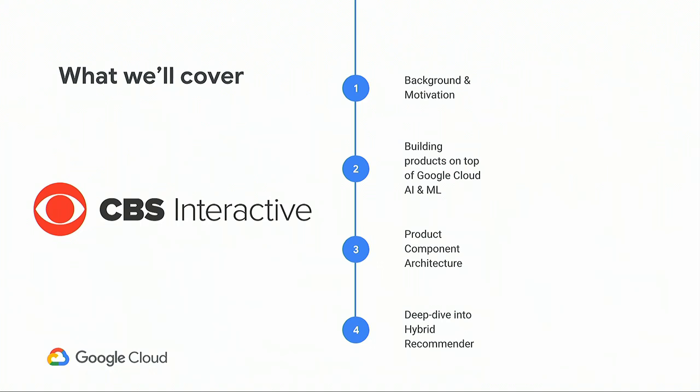Today I'd like to cover a little bit of background — it's important to understand the context from which the team emerged to understand our path to product development. I'll give you a better understanding of where we sit as a group within CBS Interactive and what we have to work with in terms of data. We'll cover motivation for using Google Cloud AI building blocks, building products on Google Cloud, our main product components, functional architecture overview, and Rob will go over our hybrid recommender system. We'll wrap up with business impact and a look at what we're doing next.